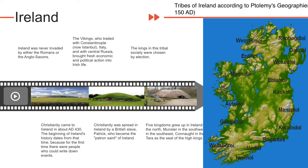Five kingdoms grew up in Ireland: Ulster in the north, Munster in the southwest, Leinster in the southeast, Connacht in the west, with Tara as the seat of the high kings of Ireland. Christianity came to Ireland in about AD 430. The beginning of the island's recorded history dates from that time, because for the first time there were people who could write down events. The message of Christianity was spread in Ireland by the British slave Patrick, who became the patron saint of Ireland. Christianity brought writing, which weakened the position of the Druids who depended on memory and the spoken word.